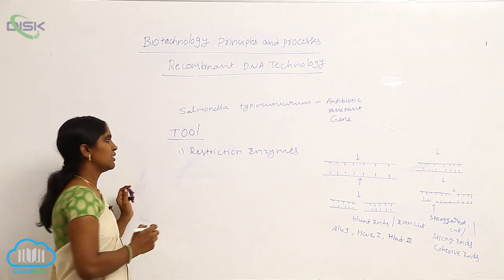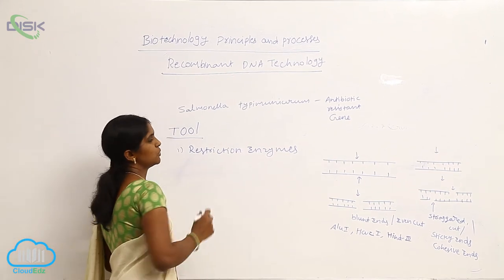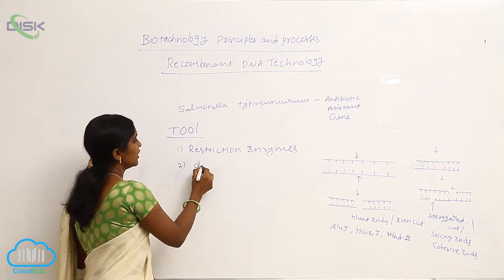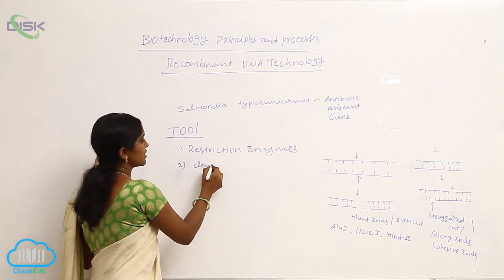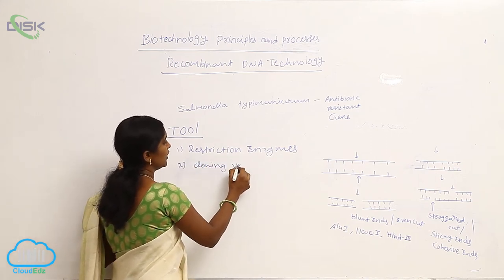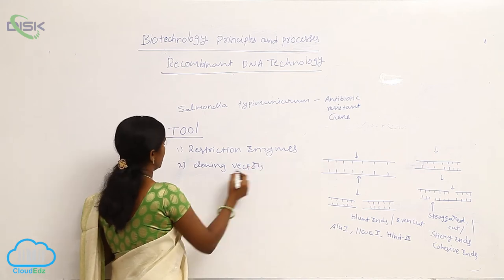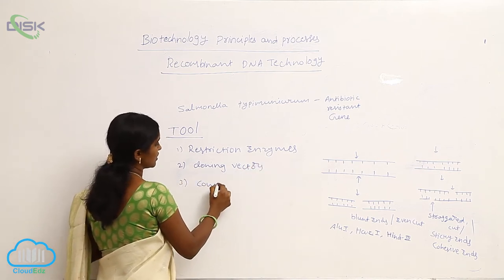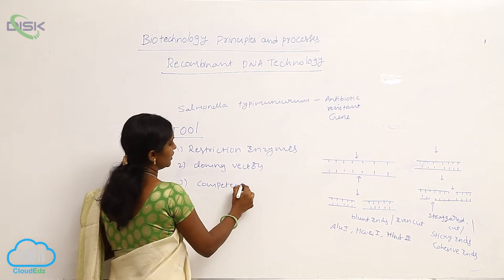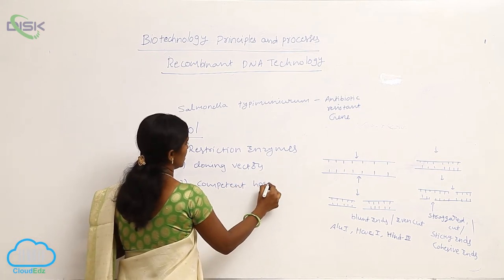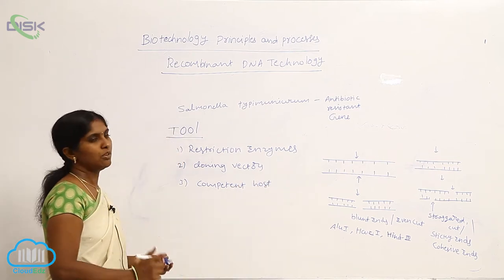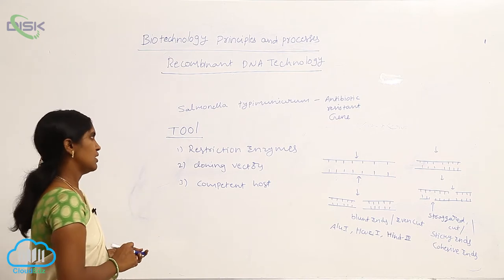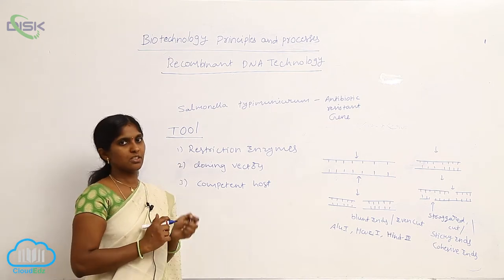The tools required for RDNA technology are: first, restriction enzymes; next, cloning vectors; and competent host. These are the desirable tools for RDNA technology.